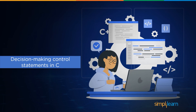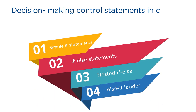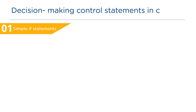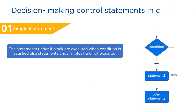First let us understand all the decision making control statements in depth. Decision making control statements are: simple if, if-else statements, nested if-else statements, and else-if ladder. Let us go through them in detail. Now let's have a look at simple if statements.